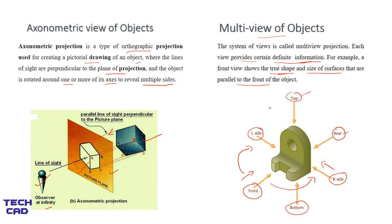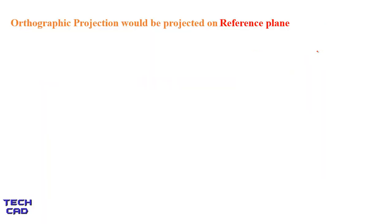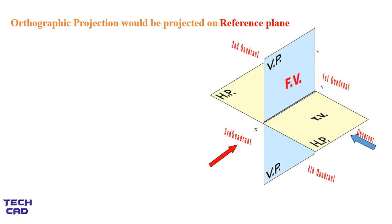In orthographic projections for engineering drawing, we do not make axonometric views — we make multi-view of the objects. To make multi-view we need some reference planes to produce the front view, top view, and side views. The orthographic projection is projected on these reference planes. I have already explained the reference plane in another video, and the link is given in the description below.